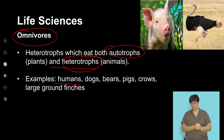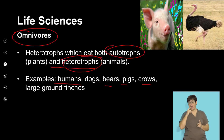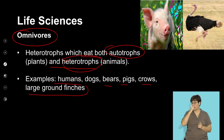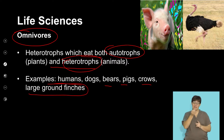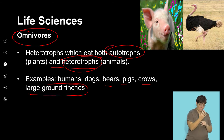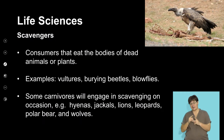Bears, pigs, crows, and even larger ground finches are all omnivores — they consume other insects as well as plant material.